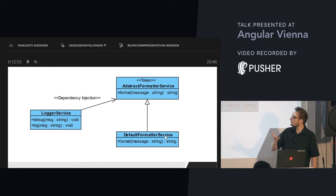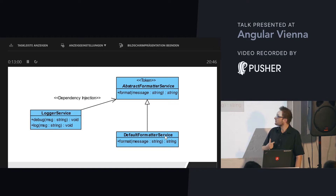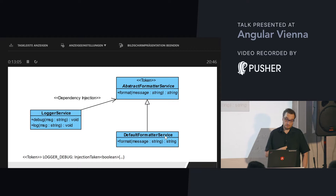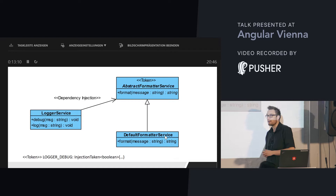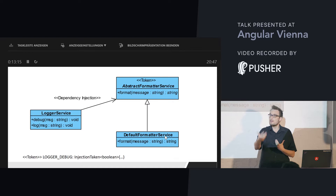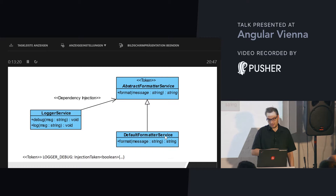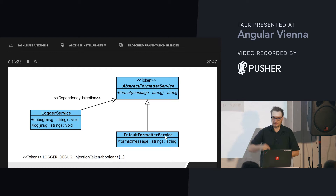The default implementation for this abstract formatter service is my default formatter service, which comes with the library. The consumer of the library can decide to go with this default implementation or with their own custom implementation. The formatter service is injected by means of dependency injection. There is another token called `LOGGER_DEBUG`, pointing to a boolean that tells you whether debug messages shall be written to the console or not — in production mode you won't do that, but in debug mode you want all debug messages shown.